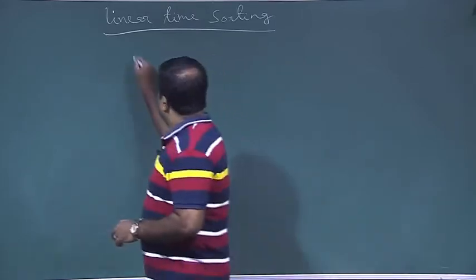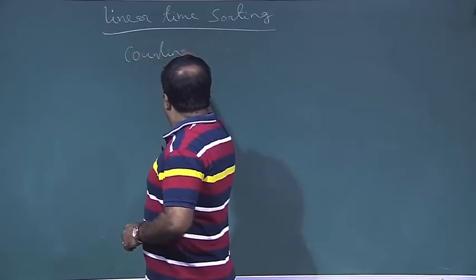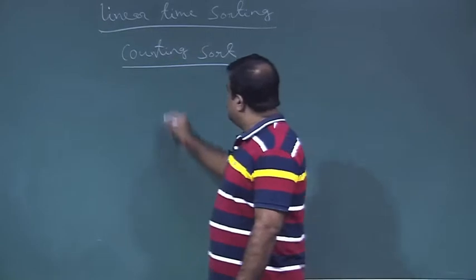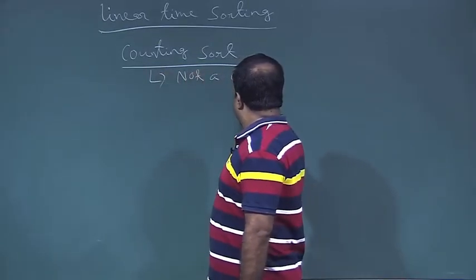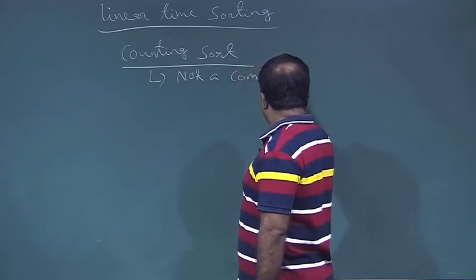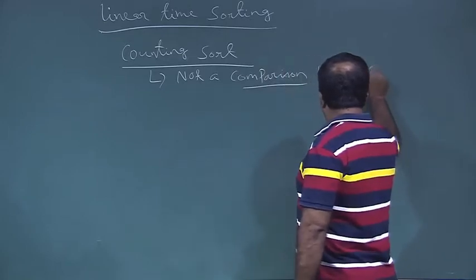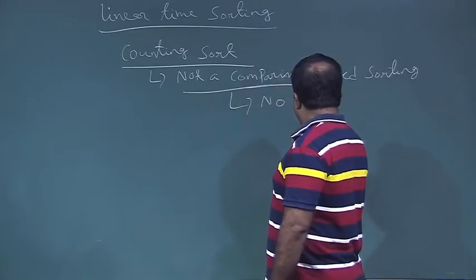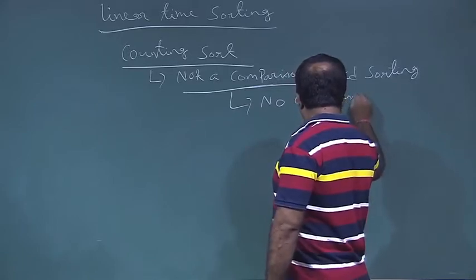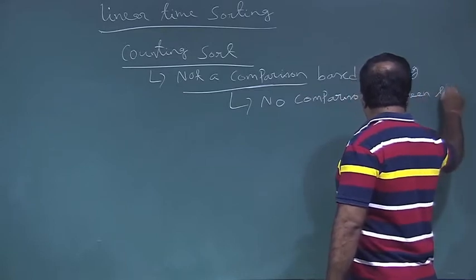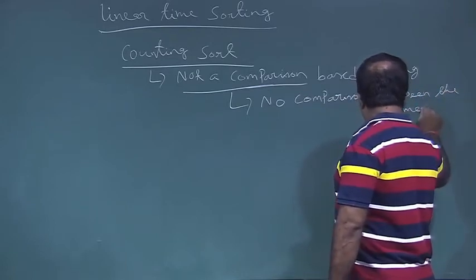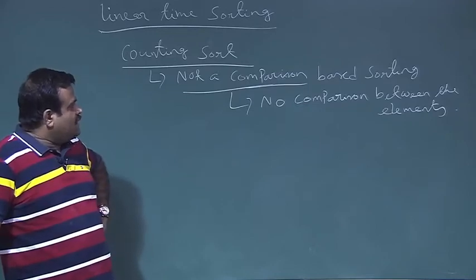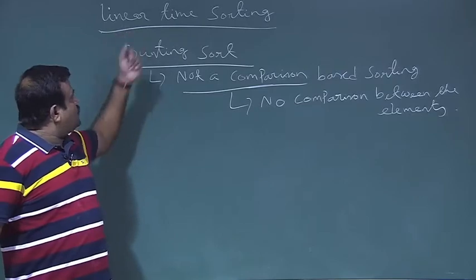Let us start with counting sort. This is one example of a linear time sorting algorithm. This is not a comparison based sorting — that means no comparison between the elements. That is why we could reduce it to linear time.